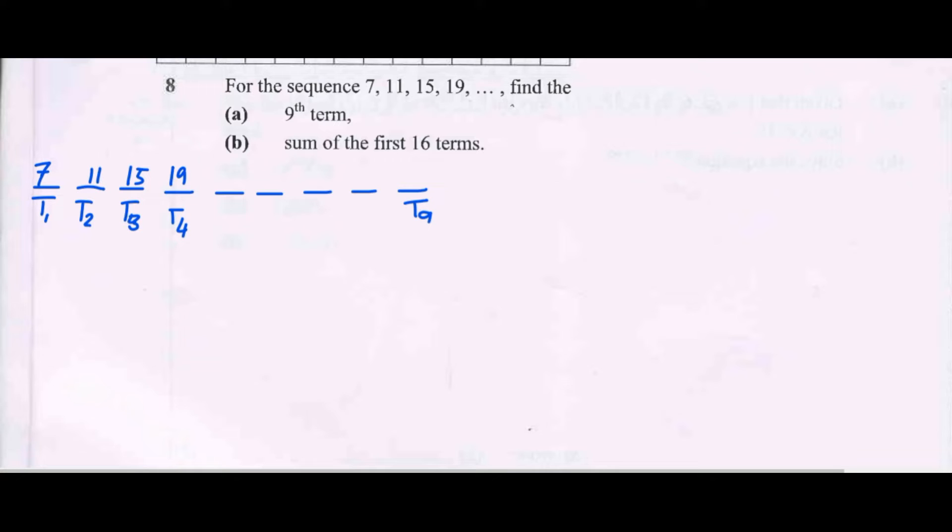What is our first step to find the number at position 9? First we need to look at the number that was added for each term to form the following term. We need to find the common difference. The formula for common difference, d, is found by calculating the difference between the second and first, or third and second, or fourth and third.